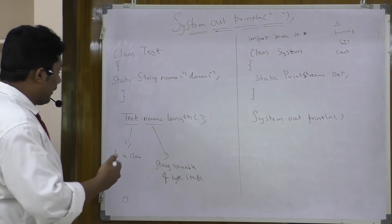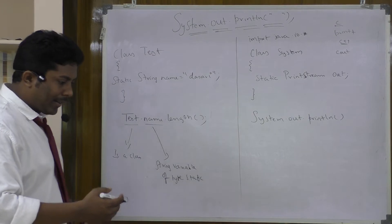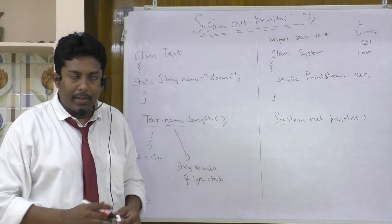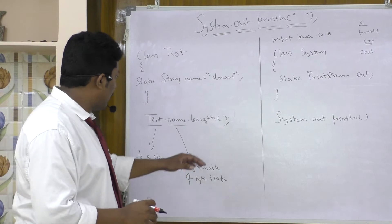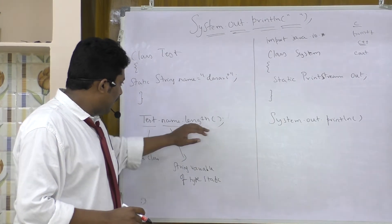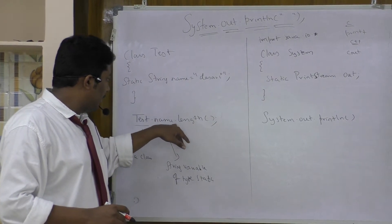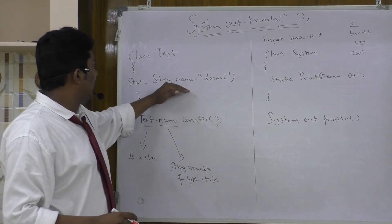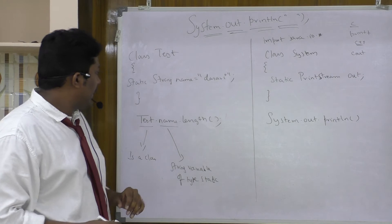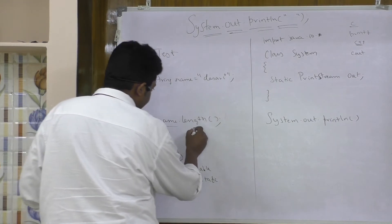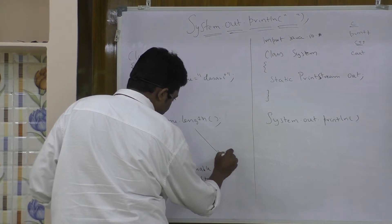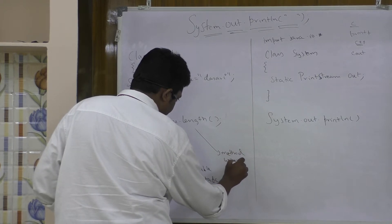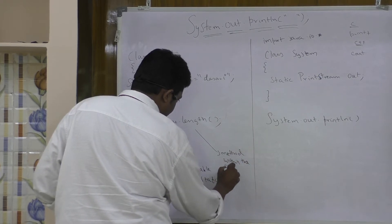If you are declaring a string, there are some underlying methods associated with that string. If you want to access those methods, you can use the dot operator to access the method within the string class.